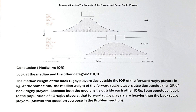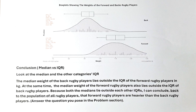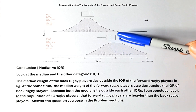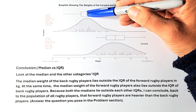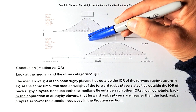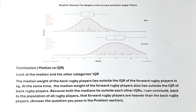The first conclusion is that we are going to compare the median and the IQR — the median of one category against the IQR of another. So the median of the back, if you bring it down, lies outside the IQR of the forward.